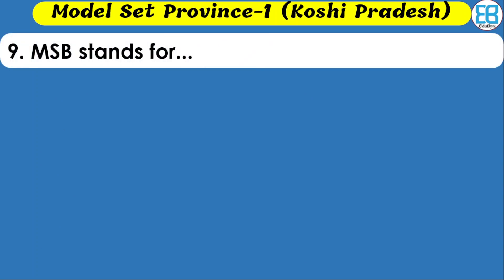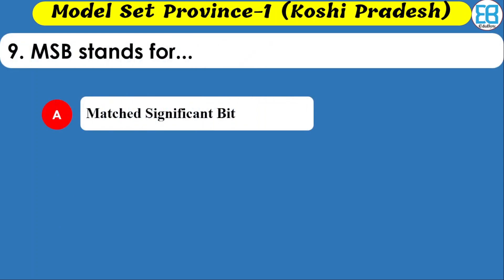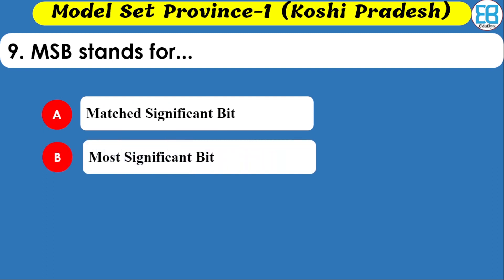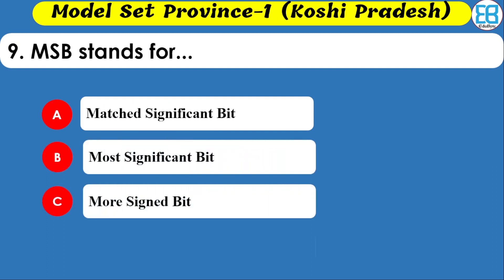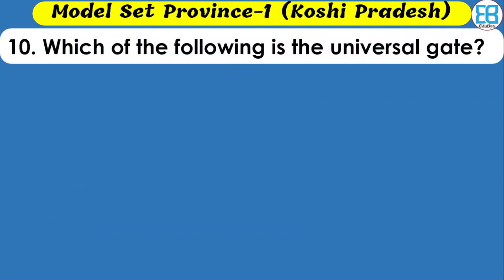What does MBS stand for? Options are most significant bit, more signed bit, and most said bit. The correct option is MSB — Most Significant Bit. Which of the following is a universal gate? Options are AND gate, OR gate, NAND gate, and NOT gate.